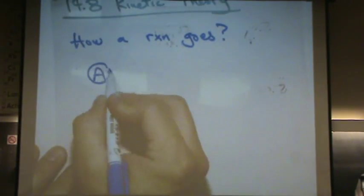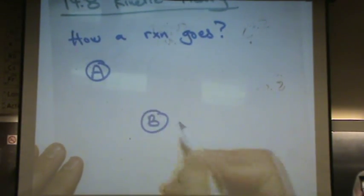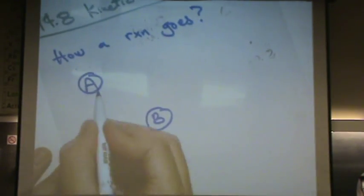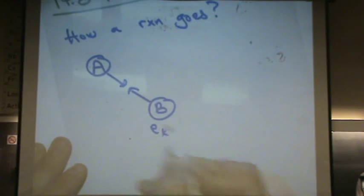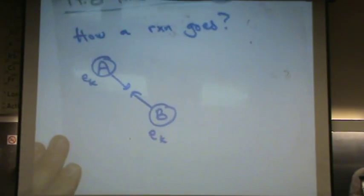Well, let's say you have A and B. They're two molecules or atoms or whatever. They're flying towards each other. They have a certain kinetic energy. E sub K stands for kinetic energy.